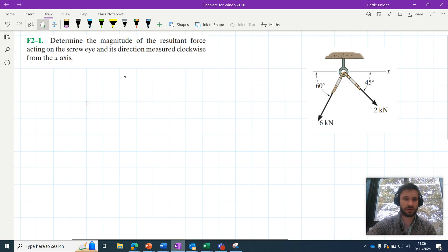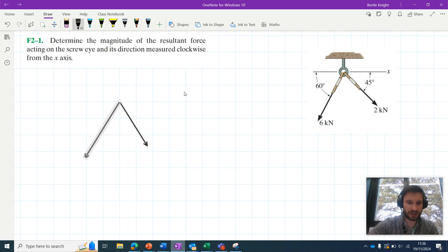So we can start off this problem just by drawing a free body diagram, and by free body diagram I just mean sketching out all the forces that are acting here. So you've got this 2 kilonewton force here and you've got this 6 kilonewton force here.